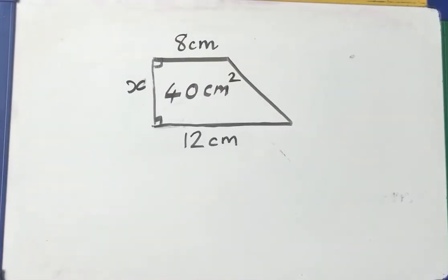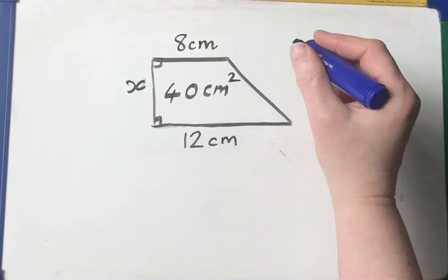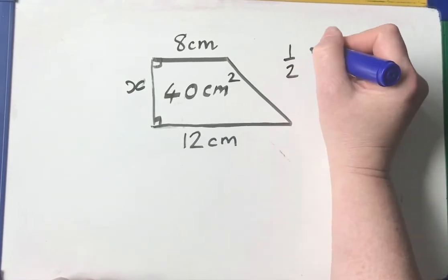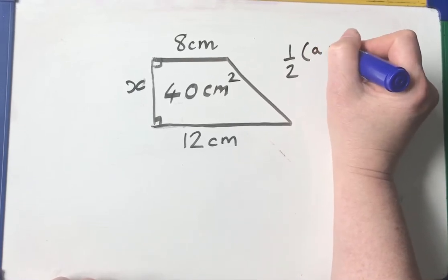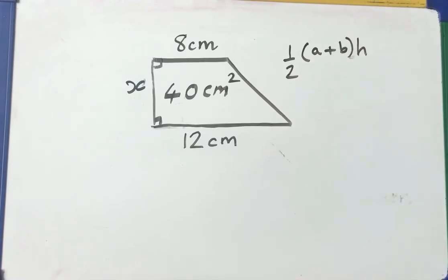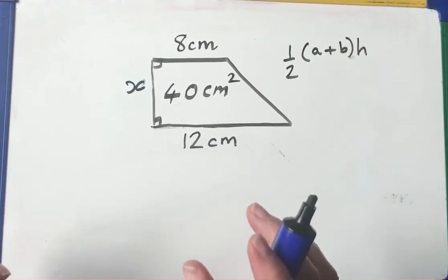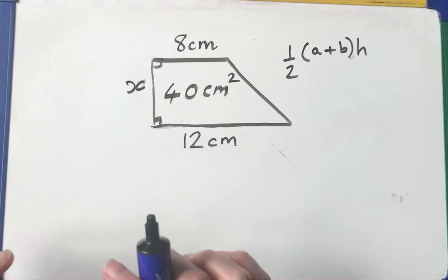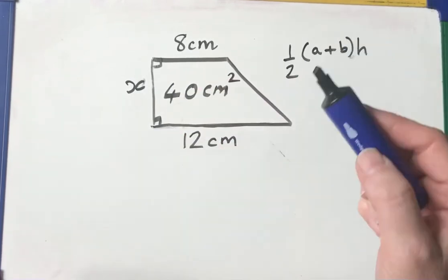Calculate x. Well, to do that, we have to know the formula for the area of a trapezium, which is half the sum of the parallel sides times the space between them. So let's have a look at what we would do. I'm just going to plug these numbers. I'm going to substitute what numbers I've got into the formula.